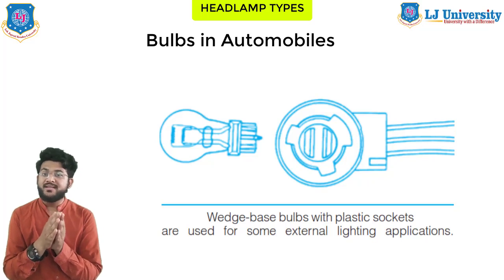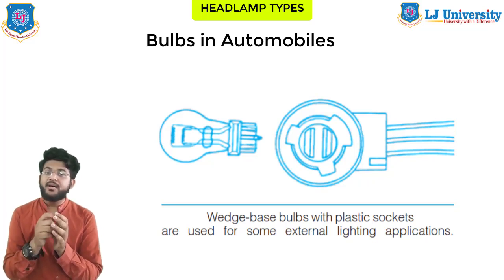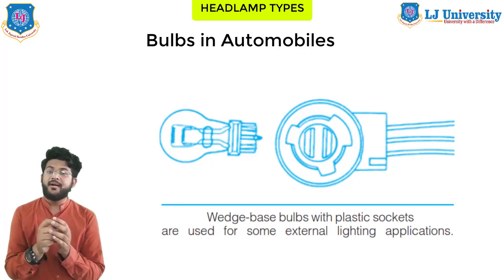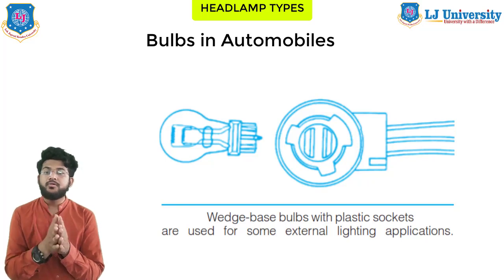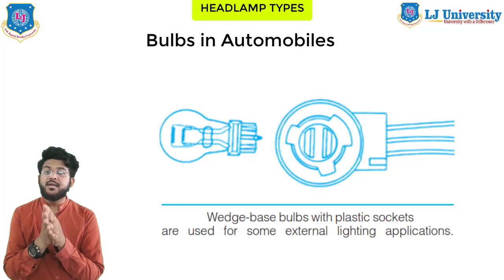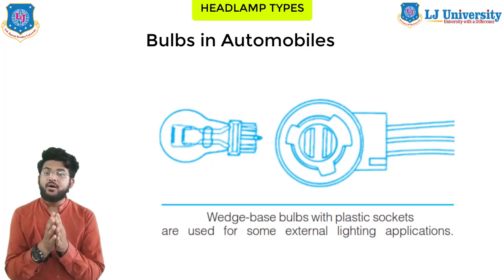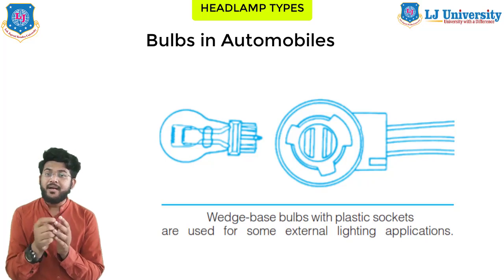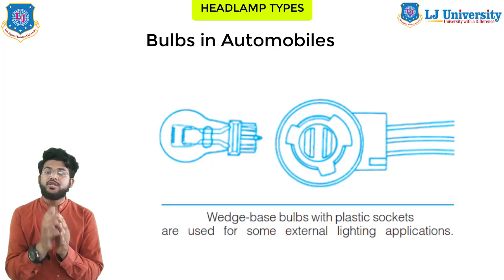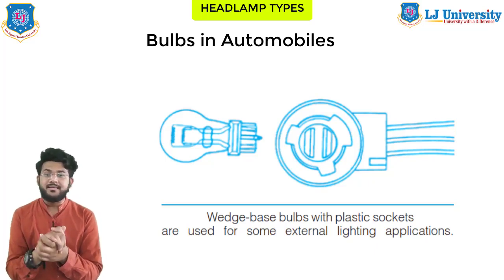The wires of the low-profile plastic socket exit from the side instead of the rear. This reduces the possibility of wire damage and permits the socket to be used in more confined areas. Since the introduction of this socket design, a series of these bulbs has been made available in both clear and amber versions.